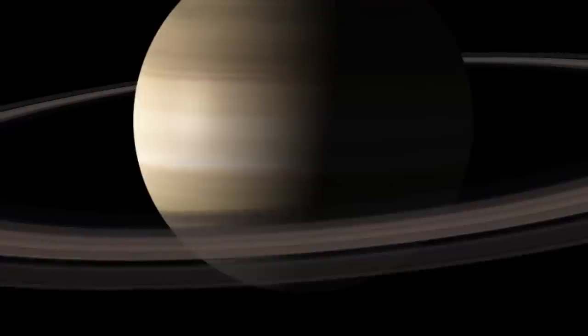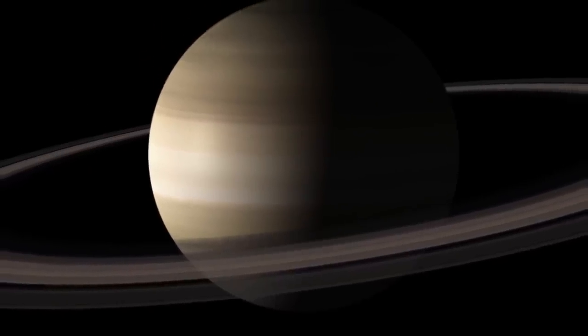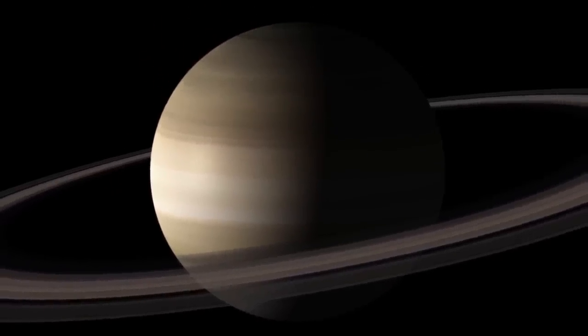The objects that make up the rings, if they are essentially all of the same structure, do not, however, have the same orbit around Saturn.